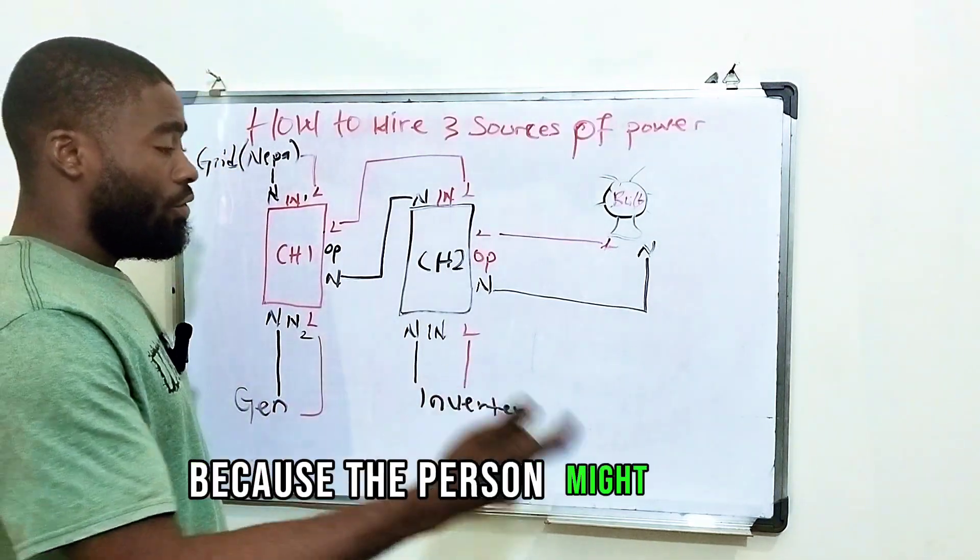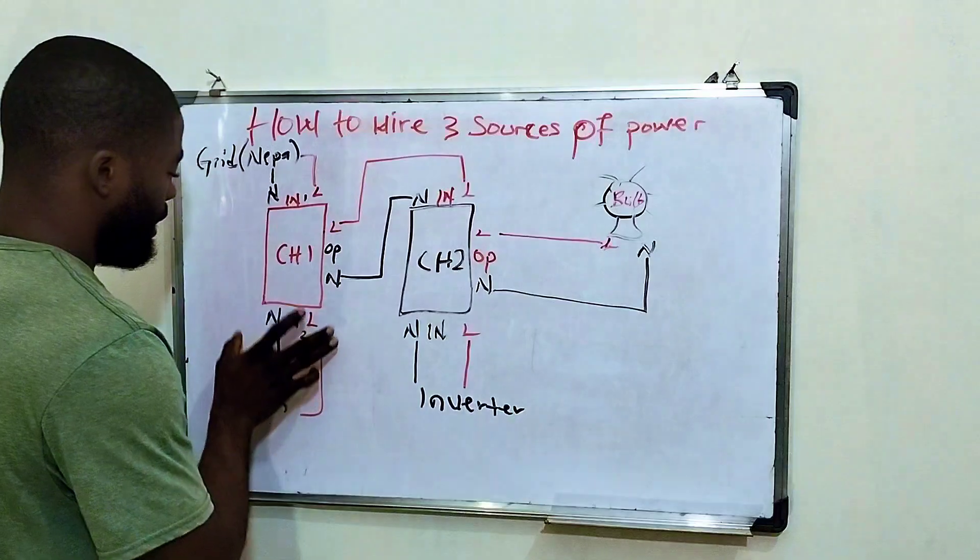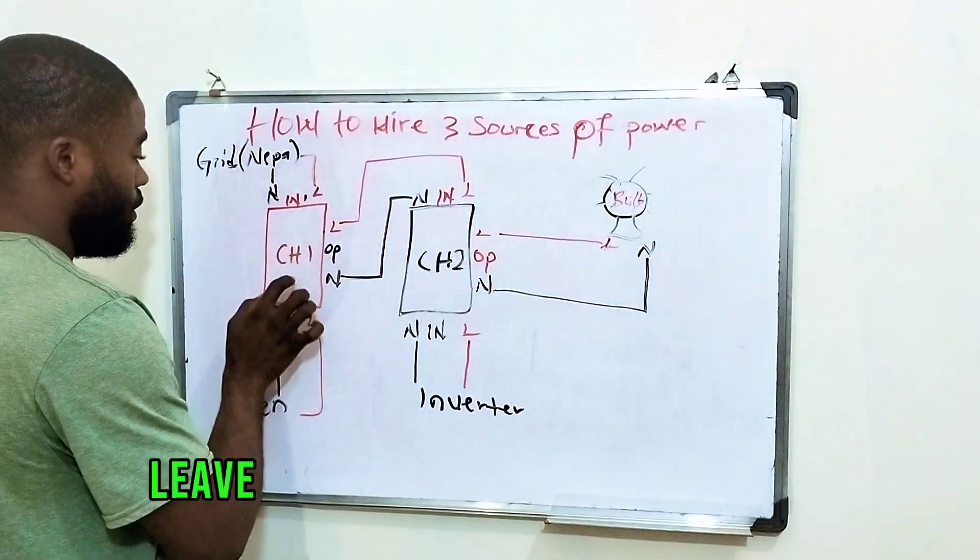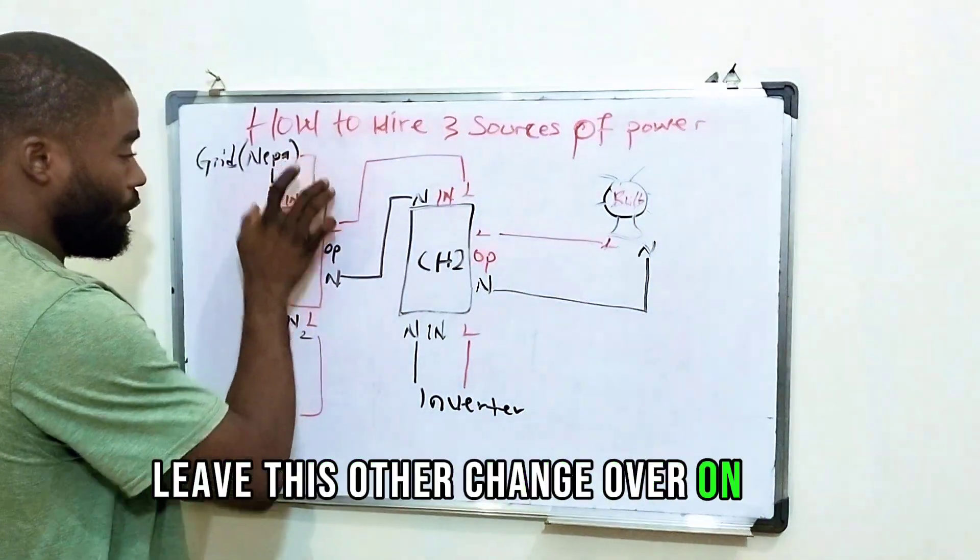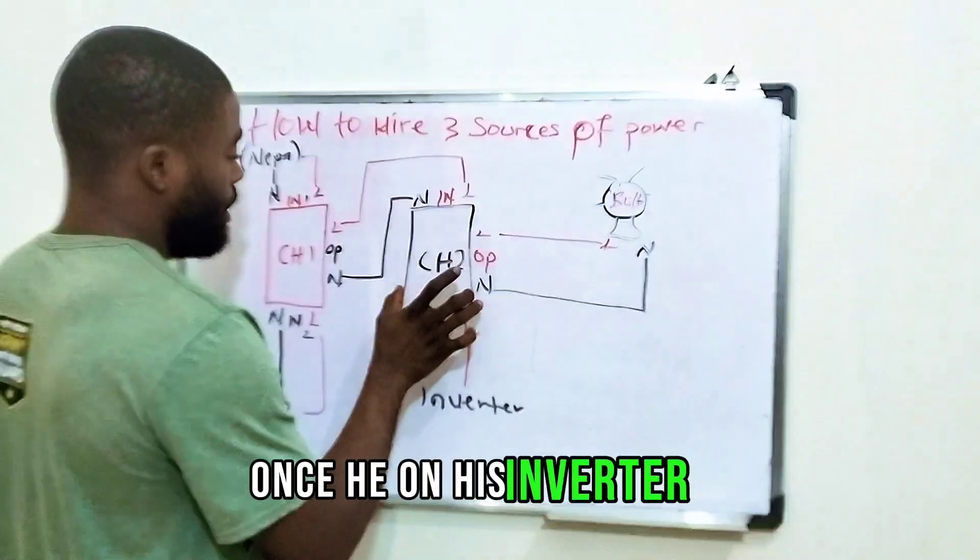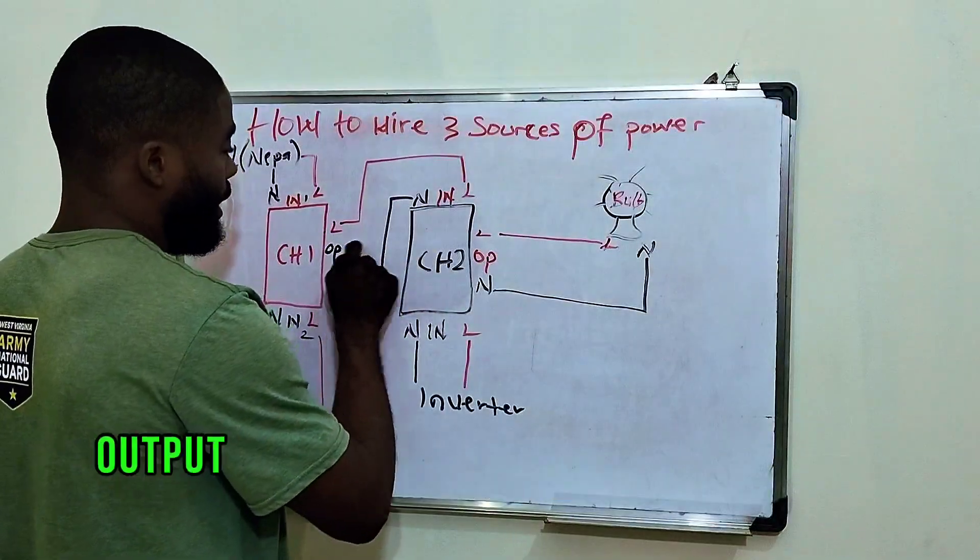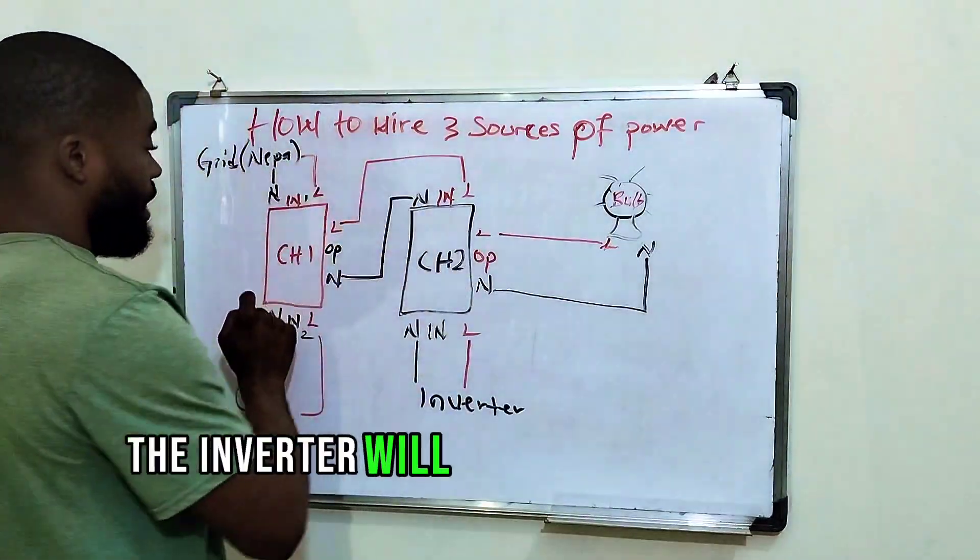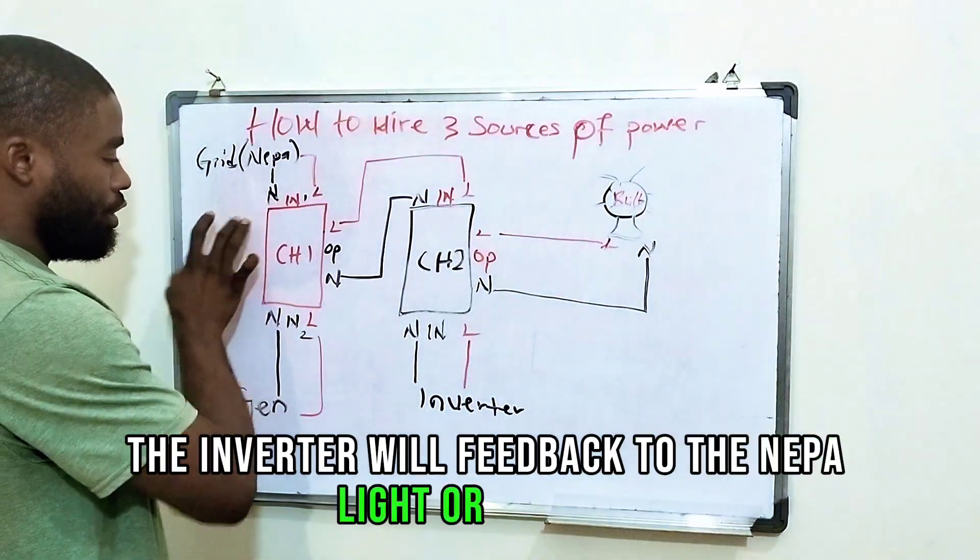Because the person might forget and leave the inverter down here, and then leave that changeover on grid. Once he turns on his inverter, because this output here is connected to the output of this one, the inverter will feed back to the NEPA light or the grid.